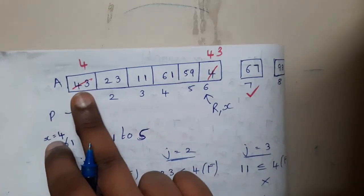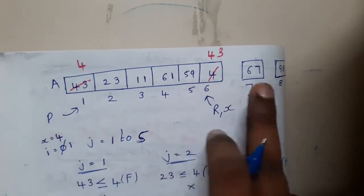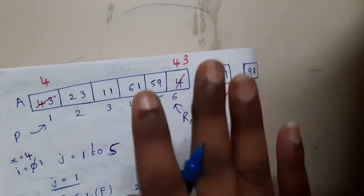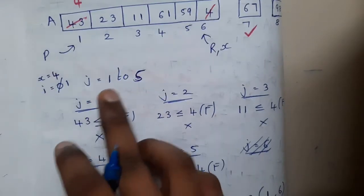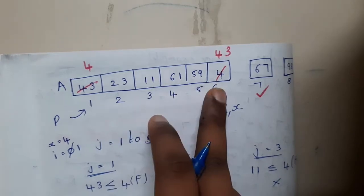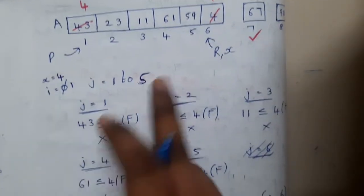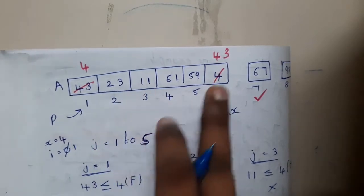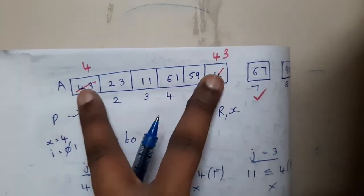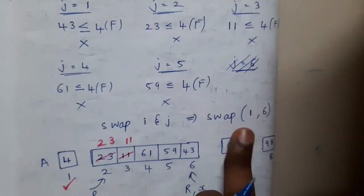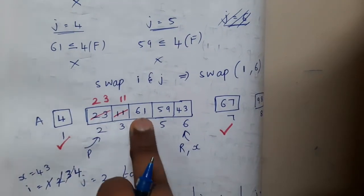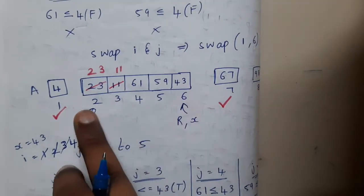We got the array 43, 23, 11, 61, 59, 4, 67, 98. Only 67 is confirmed in its position; 98 is next but not yet confirmed by the computer. Now for the left sub-array of 6 elements, we process 1 through 5 comparisons. Comparing with the first element — none are greater — so we directly swap the last and the first. We got 4 in its position, so now 4 is also out of the list.